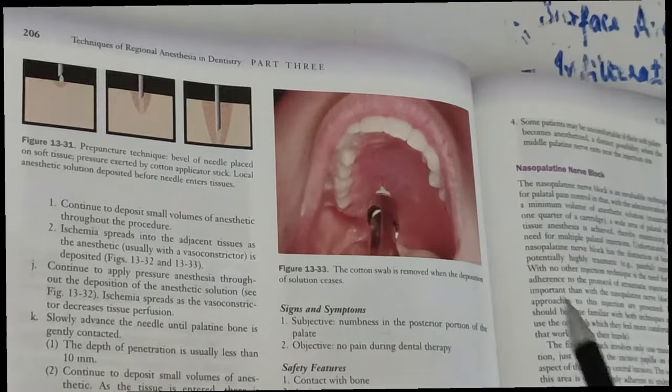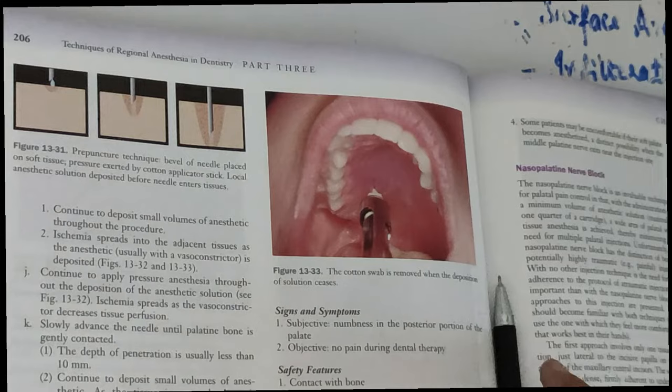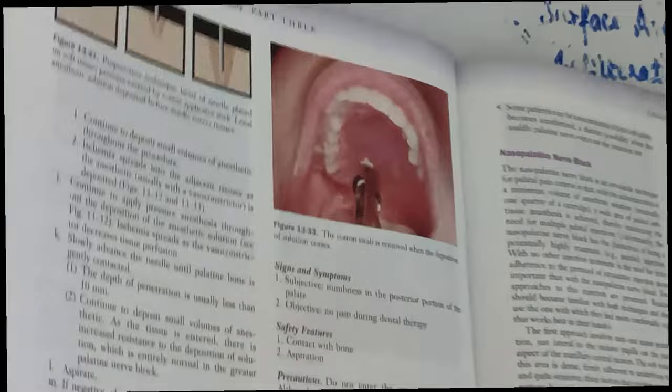The bevel is always towards the bone. There will be blanching because of the vasoconstrictors. The second palatal nerve block is the nasopalatine nerve block.